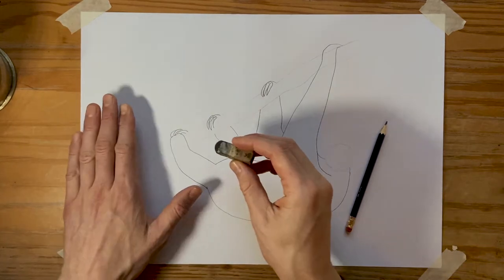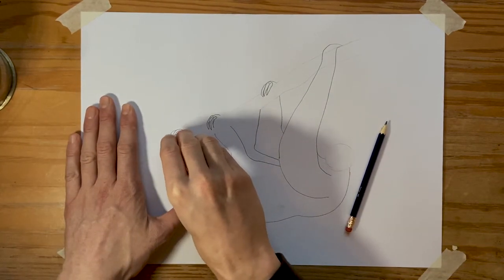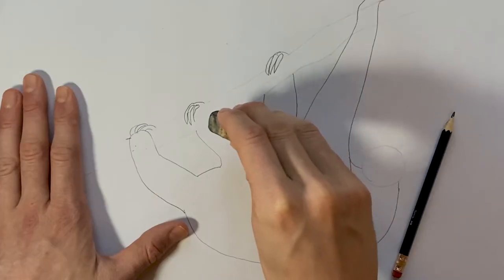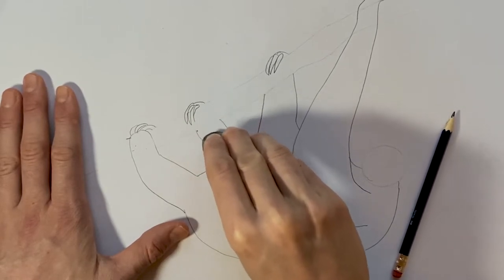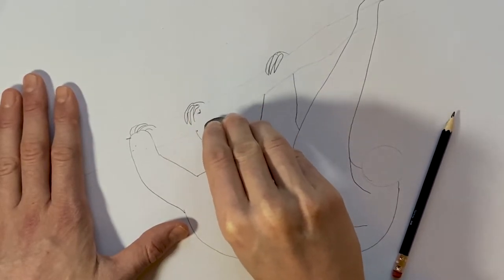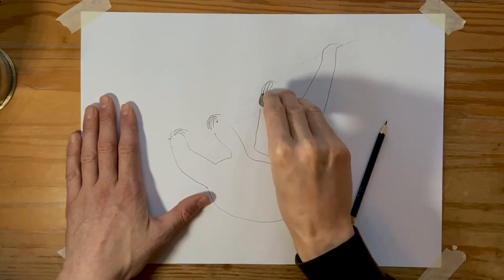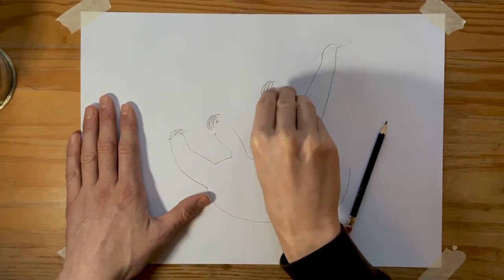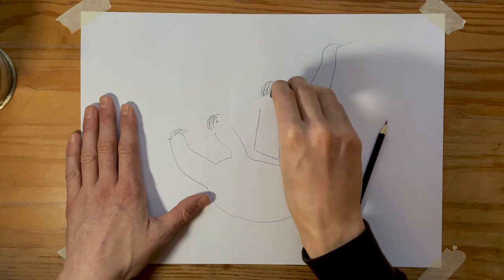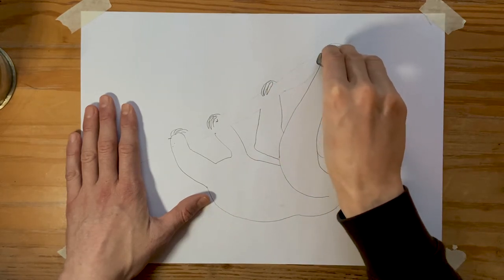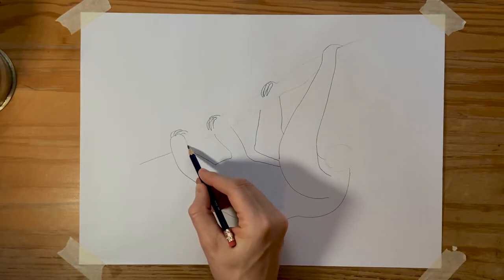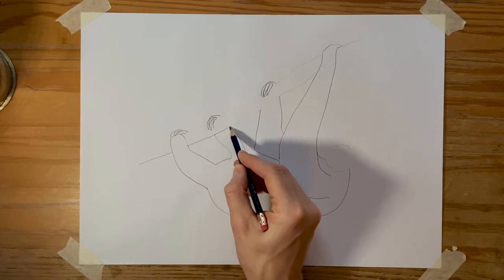And we can now erase our sketch lines from the branch here so that we have the feeling that the arms and legs of the sloth are around the branch. So just erase those sketching lines. And we can then draw up the lines of the branch here.